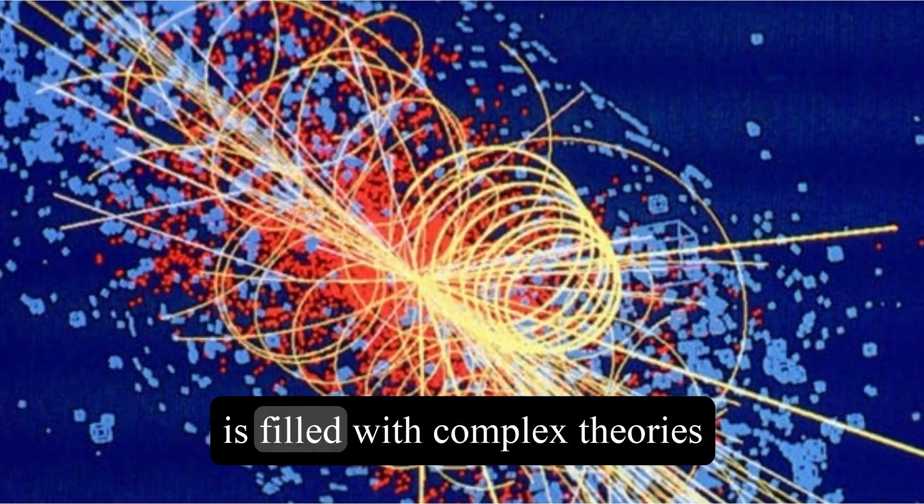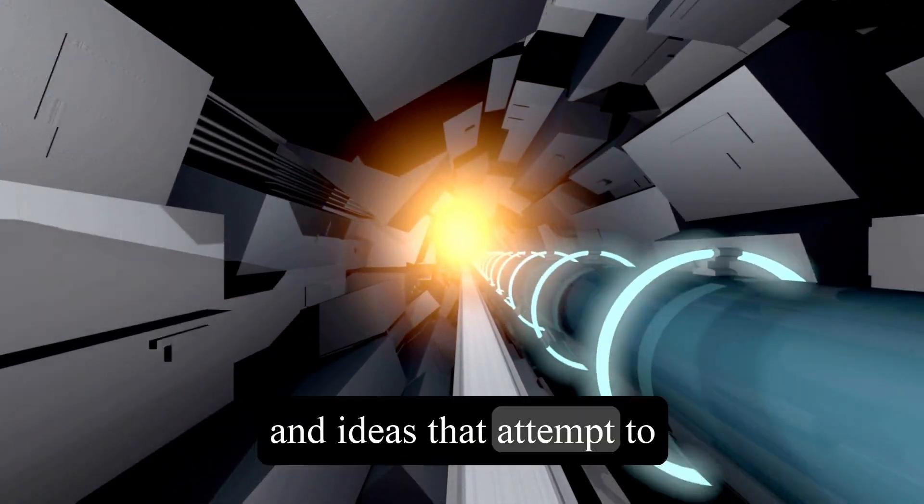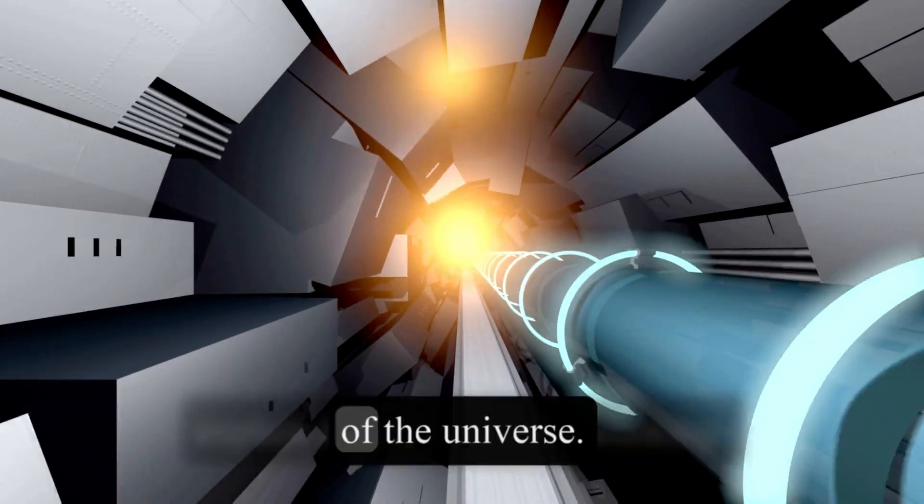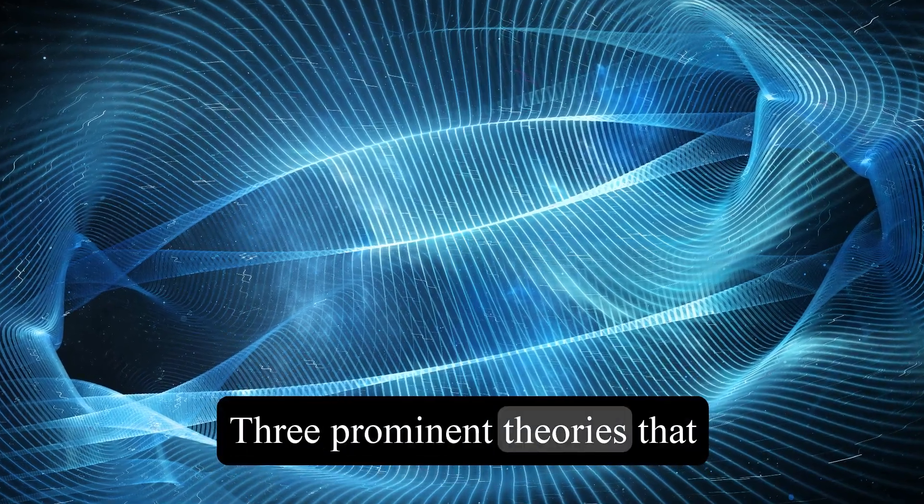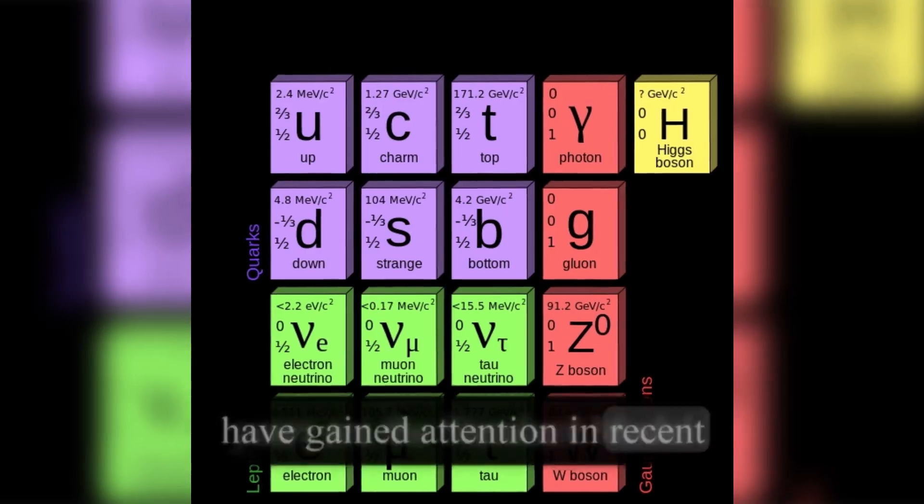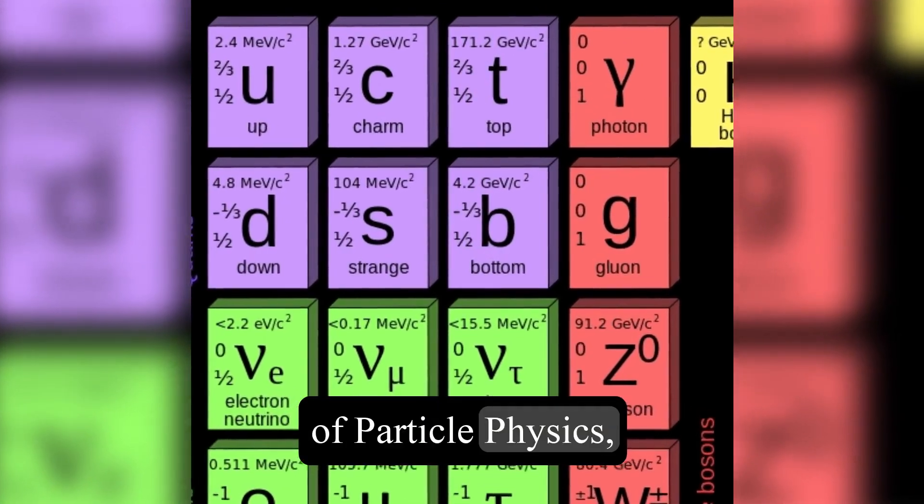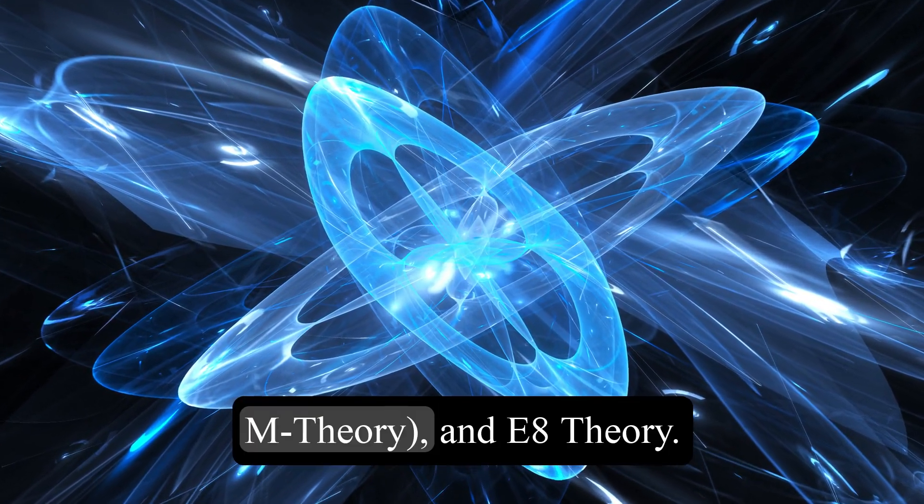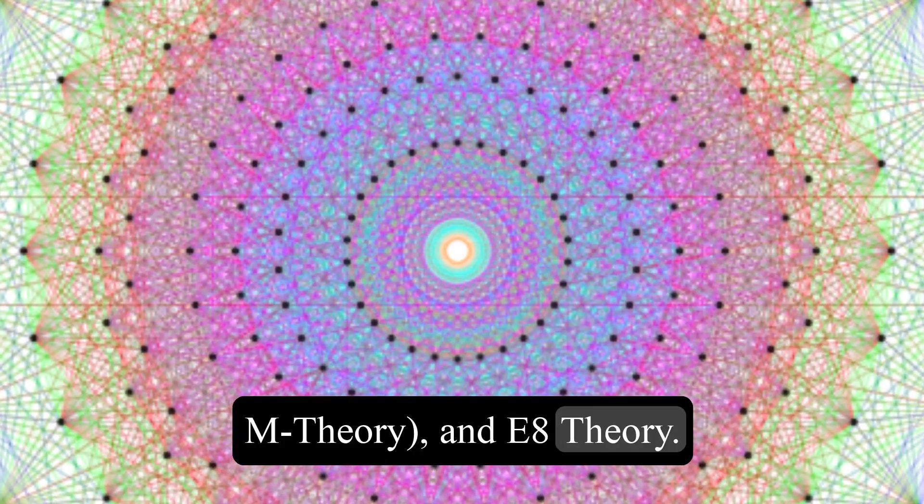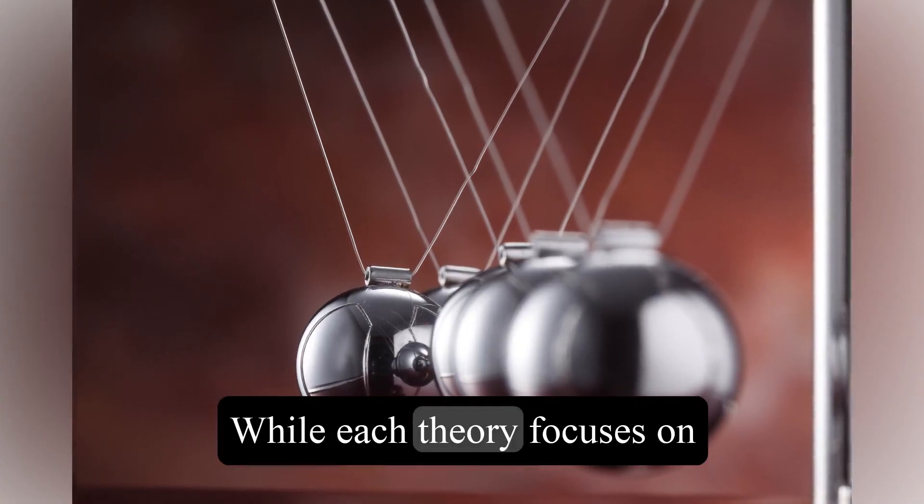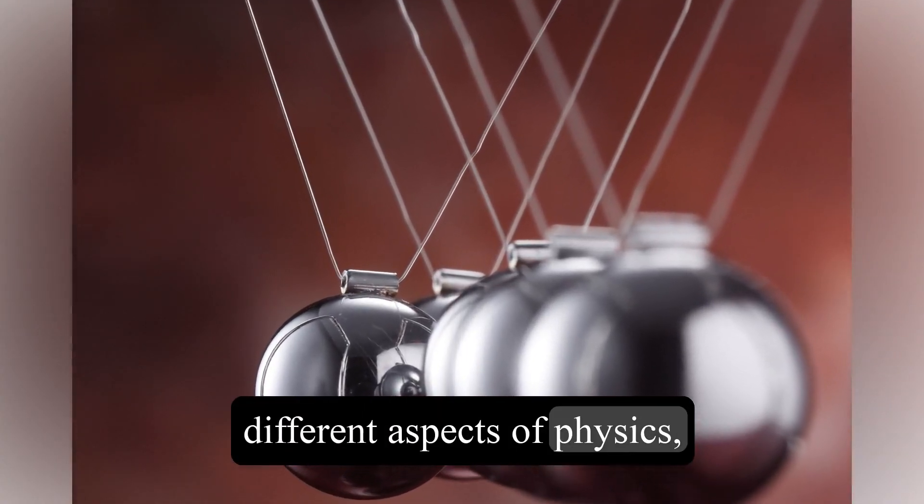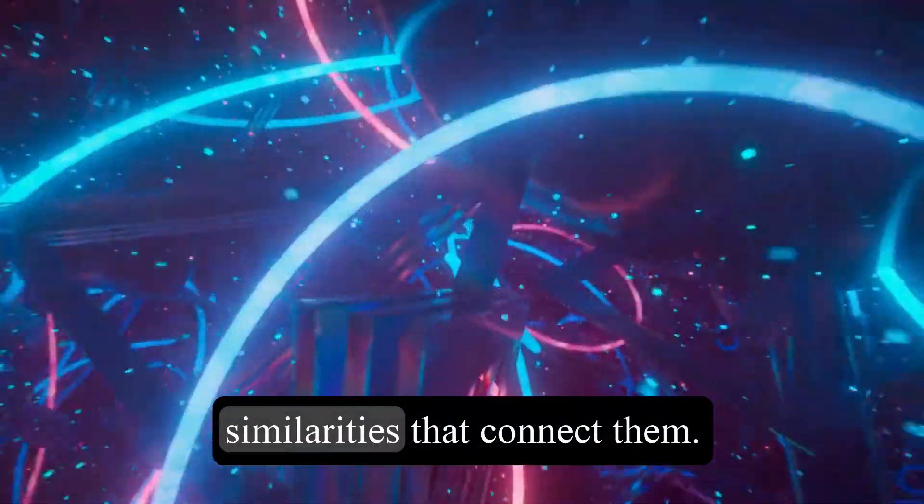The world of theoretical physics is filled with complex theories and ideas that attempt to explain the fundamental workings of the universe. Three prominent theories that have gained attention in recent years are the standard model of particle physics, string theory, including M-theory, and E-8 theory. While each theory focuses on different aspects of physics, there are intriguing similarities that connect them.